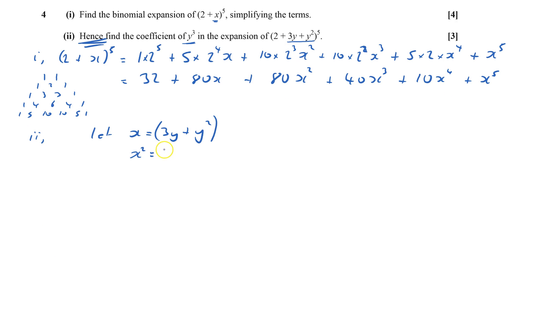x squared is 3y plus y squared times by 3y plus y squared, and that is 9y squared plus 3y cubed plus y to power 4, and that equals 9y squared plus 6y cubed plus y to power 4.